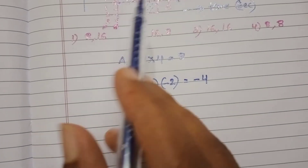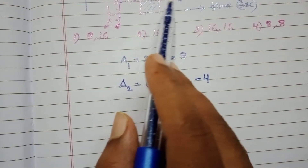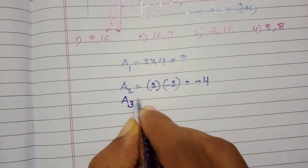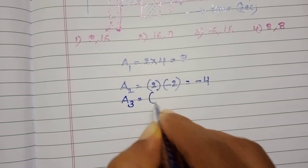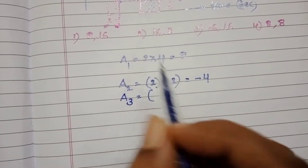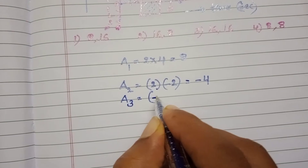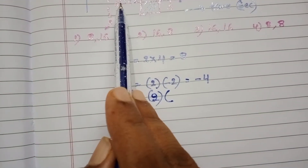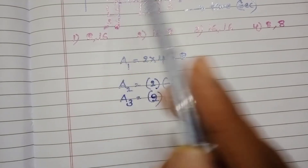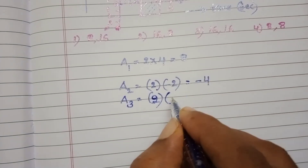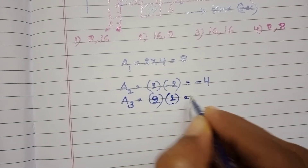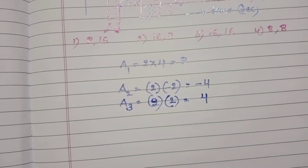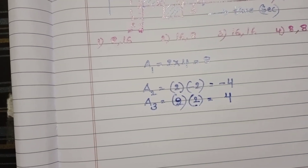The third part is from 4 to 6 seconds. So A3 equals 6 minus 4, which is 2, into velocity 0 to 2 meters per second, which is also 2. So 2 into 2 equals 4.